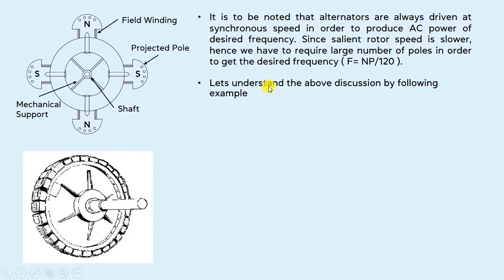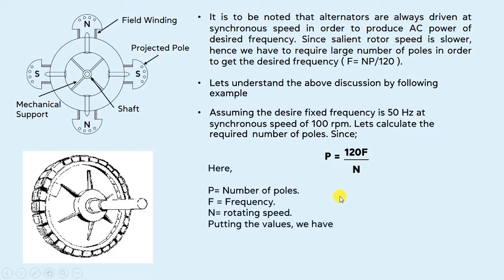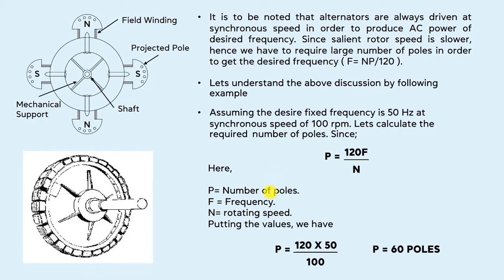Let's understand this point by the following example. Assuming that the desired fixed frequency is 50 Hz at a synchronous speed of 100 RPM, we have to calculate the required number of poles. Using the formula F = NP / 120, since we have to calculate the number of poles, P = 120F / N. Putting in the values, we get 60 poles. So if the alternator runs at 100 RPM with a fixed frequency of 50 Hz, the number of poles required is 60. Therefore, a large number of poles is required in the case of a salient type rotor, since they cannot be run at higher speed.